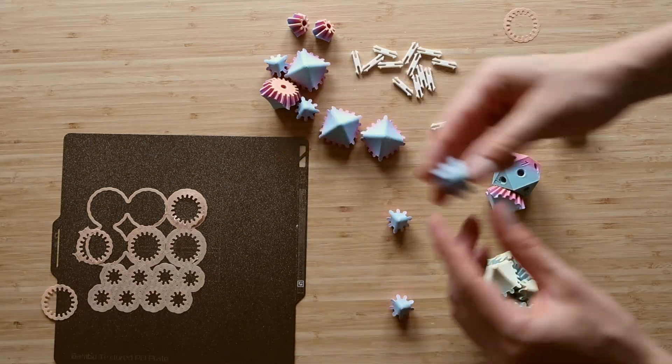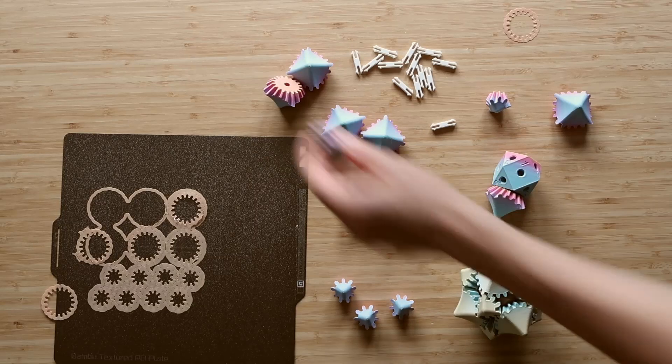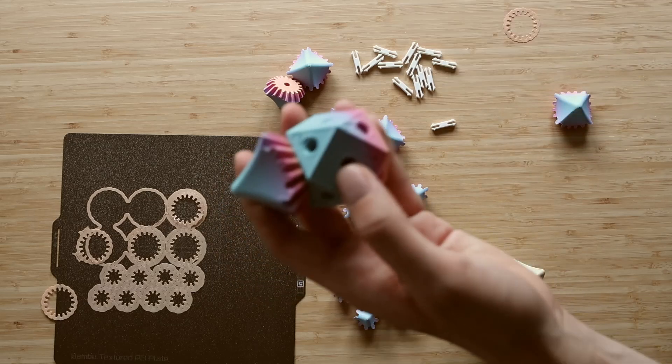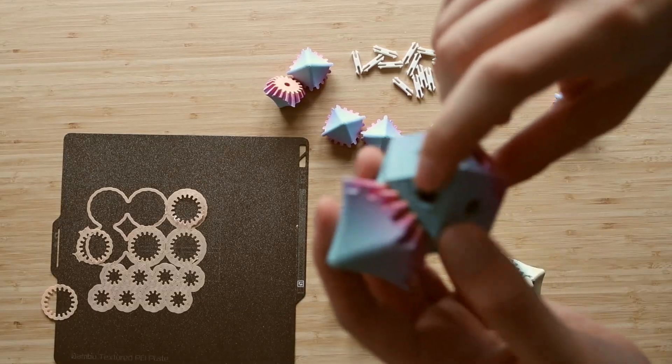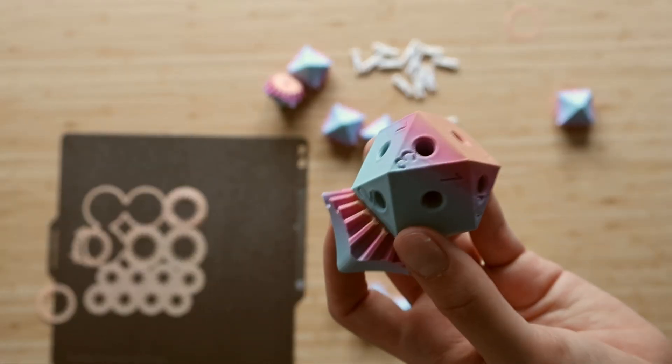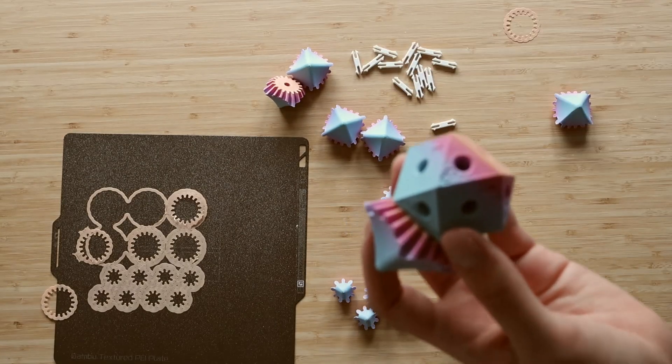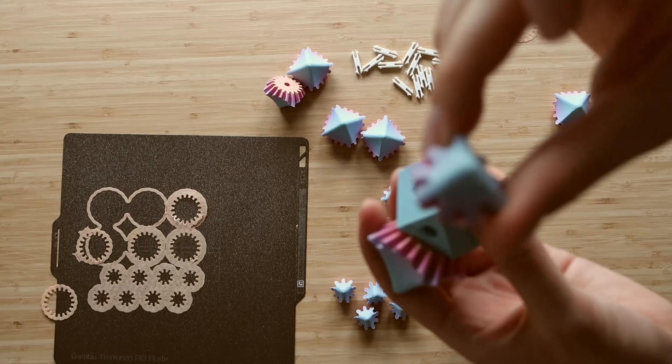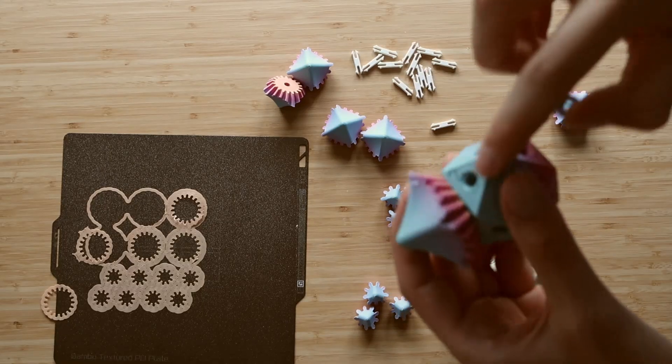So we will be sorting these by type so that we don't confuse them. Now the triangle shaped sides have the number two and some sides have the number three. What we will need to be doing is choosing one of these small gears, it doesn't really matter which type. We are going to put only this type onto the sides with the number three and then only this type onto the sides with the number two.